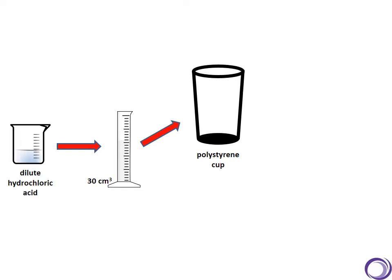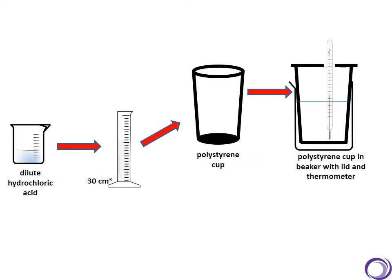Once the hydrochloric acid is in the polystyrene cup, we then add a thermometer and a lid. We must make sure that the thermometer is below the liquid, otherwise it will be measuring the temperature of the air and not of the solution. Polystyrene cups are quite light, so to make sure that it doesn't topple over, we put the whole thing inside a glass beaker.